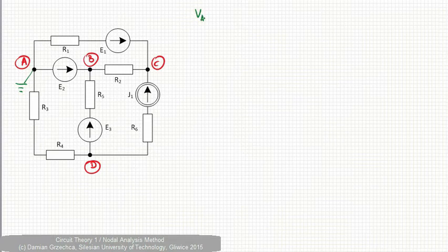we can write Va is zero. So all other potentials will be calculated with respect to node A. Node B is the voltage source of E2.